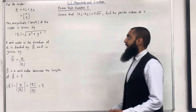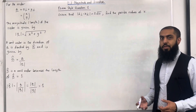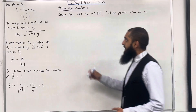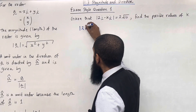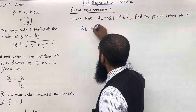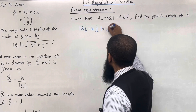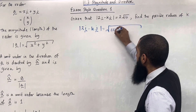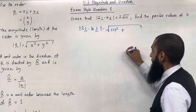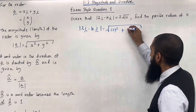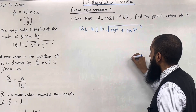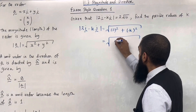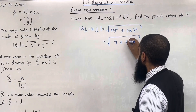I'm going to start by working out the magnitude of the vector 2i − Kj. The magnitude is given by the square root of: we take the i-component, which is 2, and square it, plus the j-component, which is −K, and square it. Simplifying, this gives √(4 + K²).